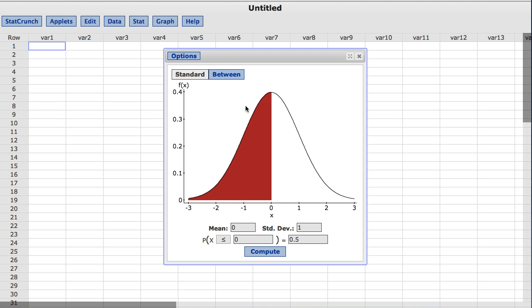The second row of inputs is used to find probabilities associated with the distribution. By default, the normal calculator shows the area below the mean of zero in red and indicates the probability of a standard normal variable being at or below zero to be 0.5.